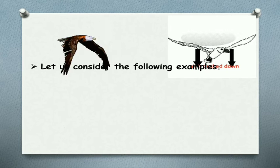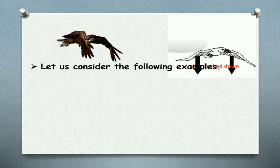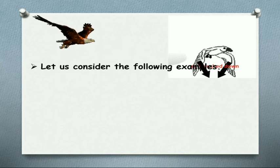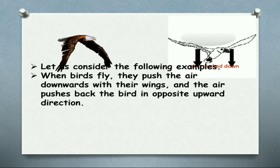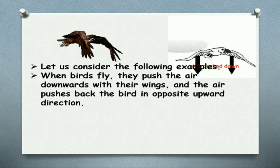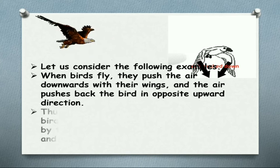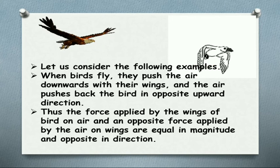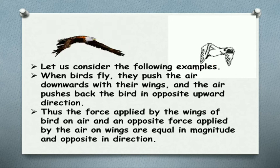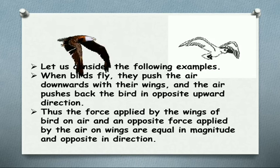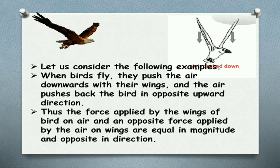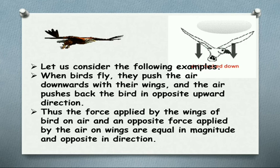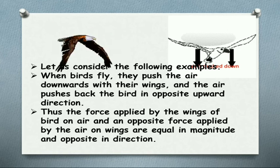With the wings, it applies some force on the air particles in the downward direction. That is called action. When automatically the air also applies a reaction force in the upward direction, the bird applies in the downward direction and air applies in the opposite direction. That's why the bird will fly like this.